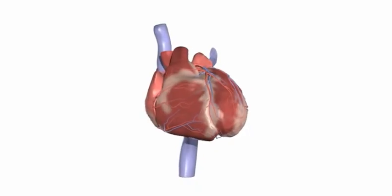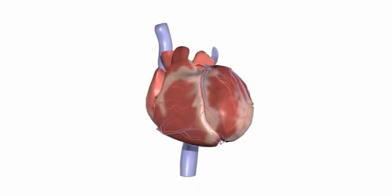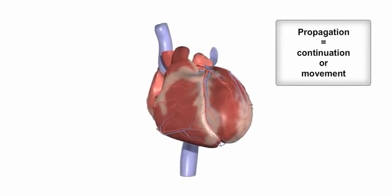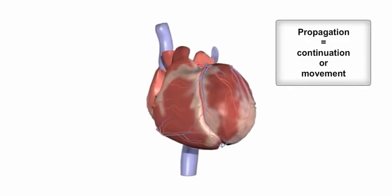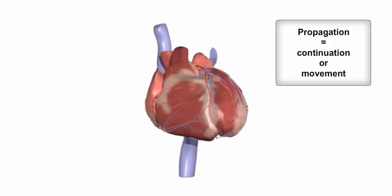The heart's conduction system controls the generation and propagation of electrical signals or action potentials that cause the heart's muscles to contract and the heart to pump blood.